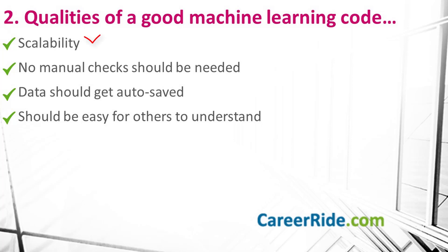The first quality is scalability — a good machine learning code is capable of being scaled up when complexities increase with time. There should be no manual checkups required; since machines are expected to work on this code, it should not require any human intervention to check which functions and parameters were run together. The data used or generated should be automatically saved at the right place, with no human required to keep a record. And of course, it should be easy to understand for others, because team members may need to work on your code to upscale it, fix it, or maximize it.